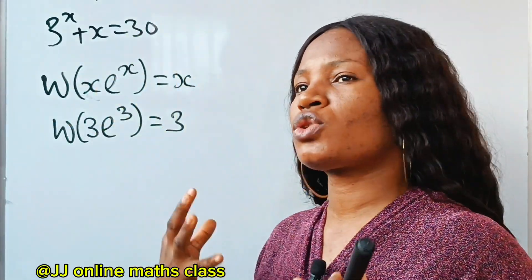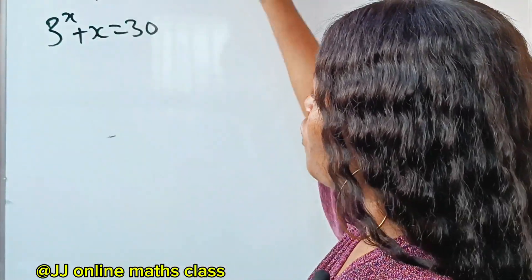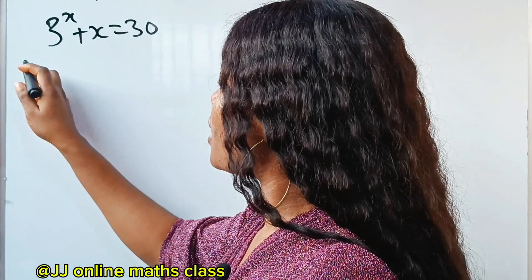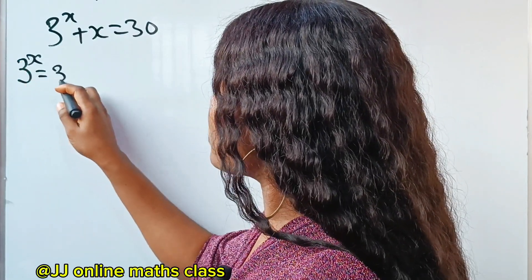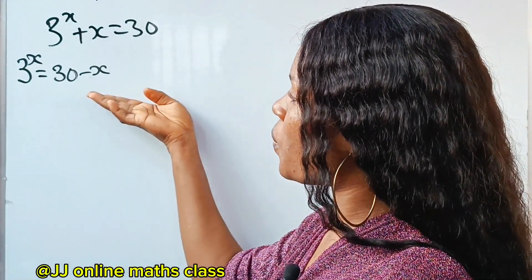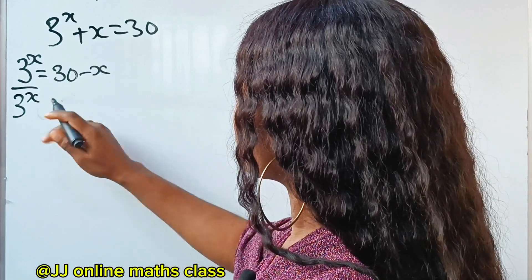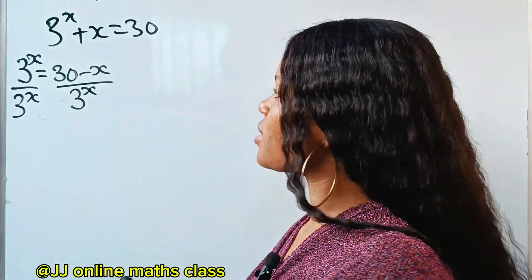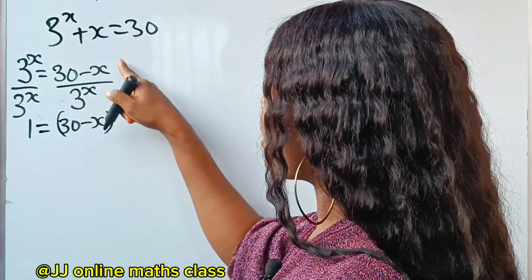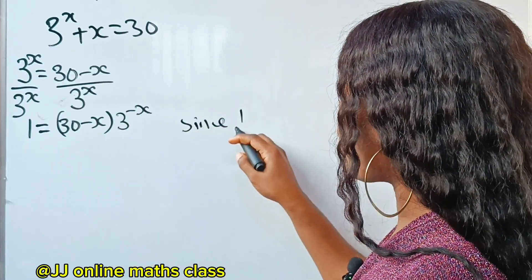To solve this equation, we are going to manipulate it into that form. First, leave the term with exponents alone, then transfer the other term to the other side. So we have 3 to the power of x equals 30 minus x. Then let's divide both sides by 3 to the power of x. We get 1 equals (30 minus x) over 3^x, and 1 over 3^x is the same as 3 to the power of minus x.